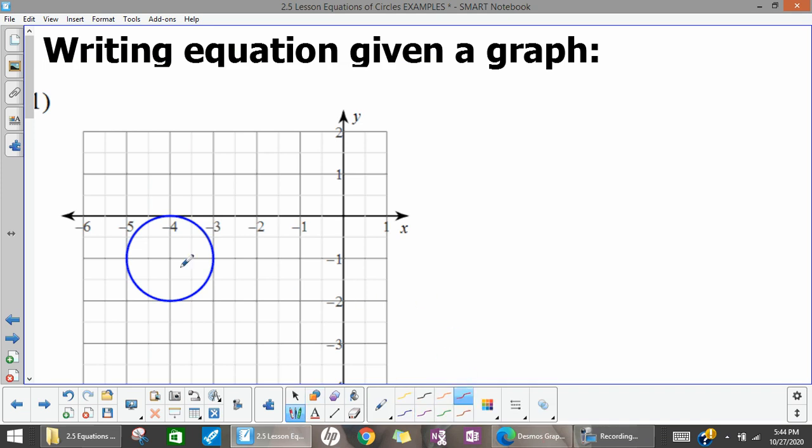We need to find the center and the radius. So my center is right here at negative 4, negative 1. That's my h, k. And then I can draw any radius. That's one unit. Even though it's two squares, you can see that two squares is equal to 1 on this graph. So r equals 1.